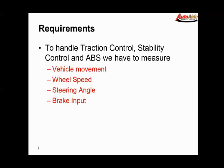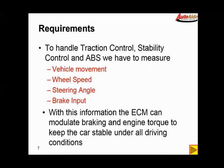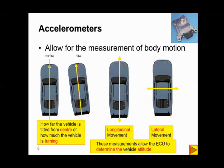Requirements to handle traction control, stability control, and ABS: we have to be able to measure vehicle speed, wheel speed, steering angle, and brake input. With this information, the ECM can then modulate braking and engine torque to keep the car stable under all driving conditions. Typically the unit or component used for this is called an accelerometer, and they allow for the measurement of body motion.